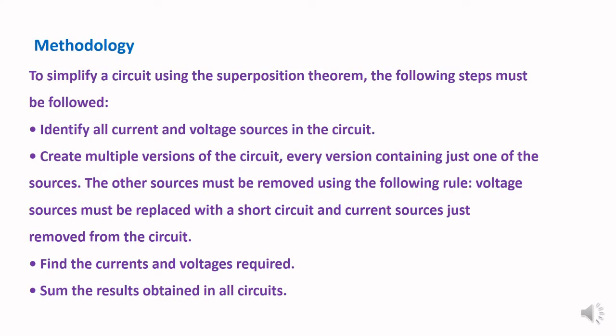Methodology: To simplify a circuit using the superposition theorem, some steps must be followed. In the first step, we have to identify all current and voltage sources in the circuit. After identifying them, we create multiple versions of the circuit, every version containing just one of the sources. The other sources must be removed using the following rule: voltage sources must be replaced with a short circuit, and current sources are just removed from the circuit — that means open circuit.